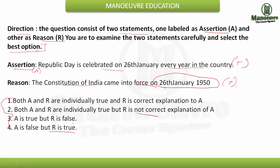The options typically are: both A and R are individually true and R is the correct explanation of A; both A and R are individually true but R is not the correct explanation of A; A is true but R is false; A is false but R is true. Since both statements are individually true, I apply the word 'because' and re-read: Republic Day is celebrated on 26th January every year because the Constitution of India came into force on 26th January 1950. This makes perfect sense, so option one is the correct answer.